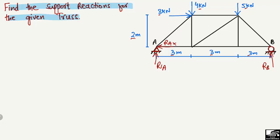To find these reactions, we use the equation: summation of moments at a point equal to zero. Let's assume the summation of moments at point A equal to zero. Clockwise moment is taken as positive and anticlockwise moment is taken as negative — this is just our sign assumption; you can also take anticlockwise as positive.